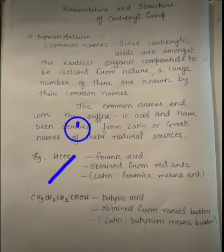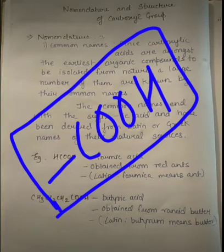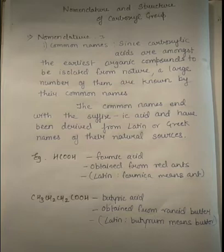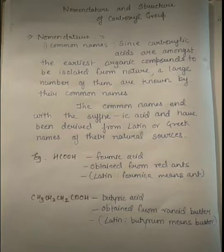If we talk about carboxylic group, then COOH — this functional group is termed as carboxylic group. And if we talk about nomenclature, we see two forms: one is the common names and the other is the IUPAC name. When we talk about common names, it is mostly derived from the natural sources. And IUPAC stands for International Union of Pure and Applied Chemistry.